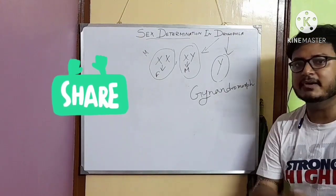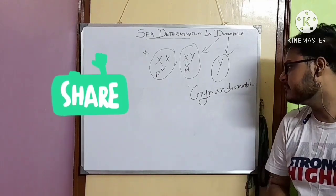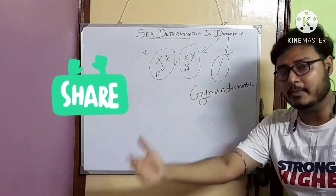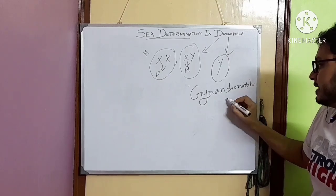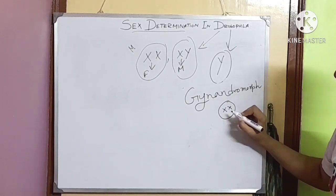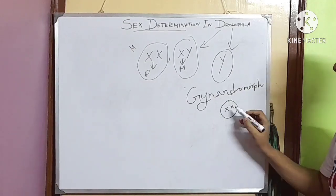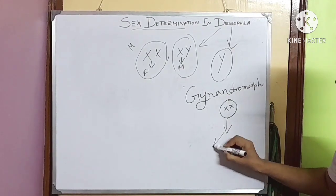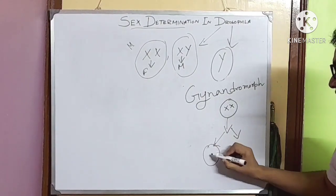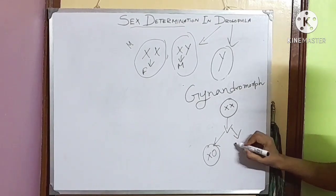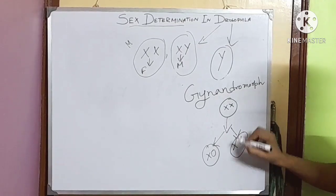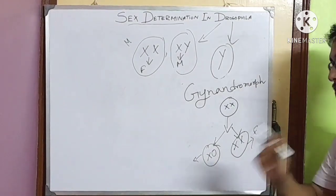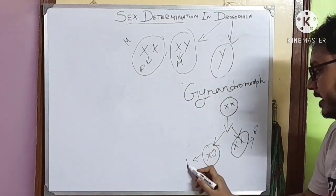During early stage of development, if a cell loses its chromosome due to mitosis, when a cell has XX chromosomes and during mitosis one cell loses one X chromosome and becomes XO and other cells contain both two X chromosomes, this part becomes female and this part which lost one chromosome will become male.